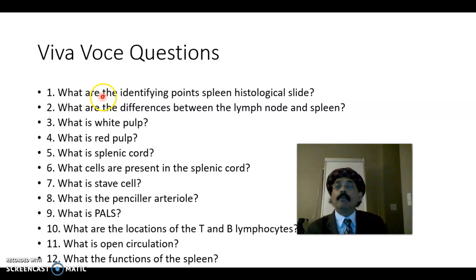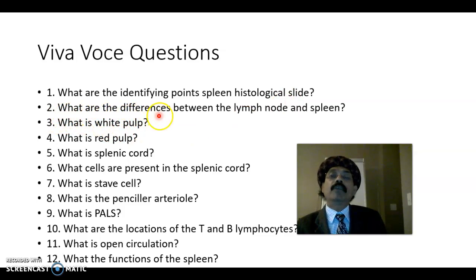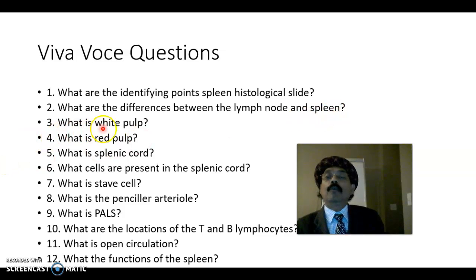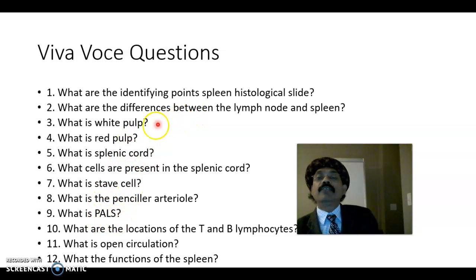Some viva questions: What are the identifying points of a spleen histological slide? We have the capsule, trabeculae, red pulp, and white pulp. What are the differences between the lymph node and spleen? The spleen has no efferent vessel, no cortex, and no medulla. What is the white pulp? The white pulp is a lymphatic nodule with the central artery and the lymphocyte sheath around it — called PALS, periarterial lymphatic sheath.